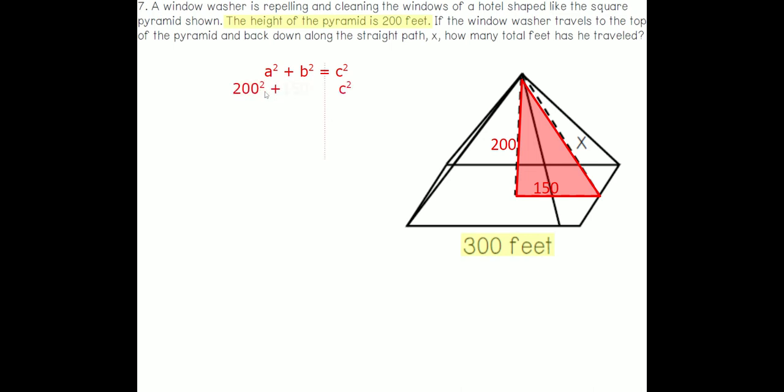We should get 200 squared plus 150 squared equals C squared. 200 squared is 40,000. 150 squared is 22,500. We add those up, and then we square root, and we get C equals 250. That is not our answer. We know this is 250, but that's not our answer because they are asking us how many total feet has he traveled if he travels to the top of the pyramid and back down. So it goes up and then down.